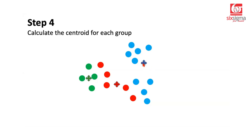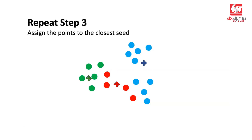Now we are going to repeat step three. This time, we will look at the proximity of all the points with respect to the newly formed centroids. Are there points which are closer to the green centroid compared to any other centroid? Maybe this particular point is closer to the green centroid. We perform step three again and give it the appropriate membership. Similarly, these points here are all closer to the red centroid, so we appropriately assign them the red color, and the remaining points stay with the blue centroid.